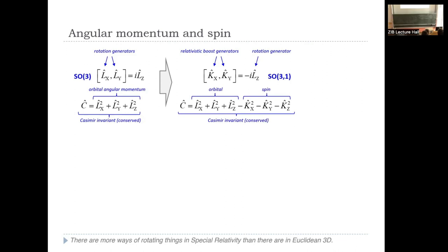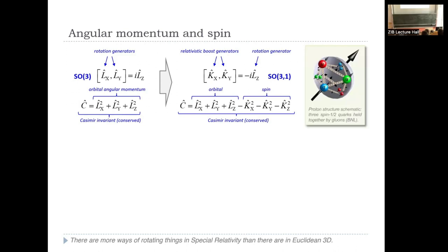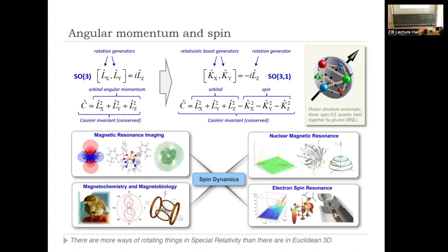The Casimir invariant now has six generators, giving a correction to the conservation law. You have the orbital angular momentum and this little correction — this is only for elementary particles. Composite particles like nuclei have nuclear spin that isn't really spin; it's just the total angular momentum of the ground state with orbital coupling inside the nucleus. Because of that magnetic moment, we have our lovely area of spin dynamics with magnetic resonance — imaging, magnetic chemistry, magnetobiology, and NMR.